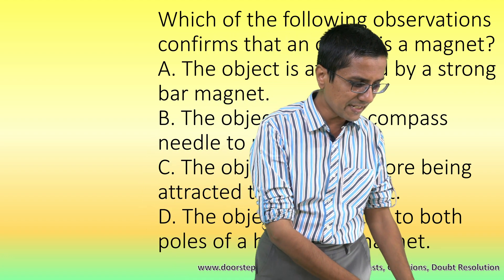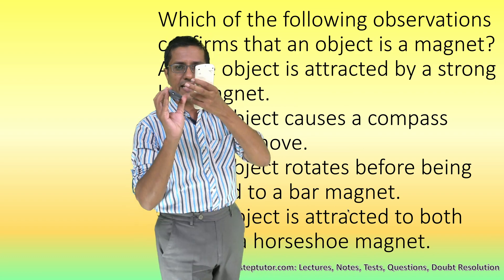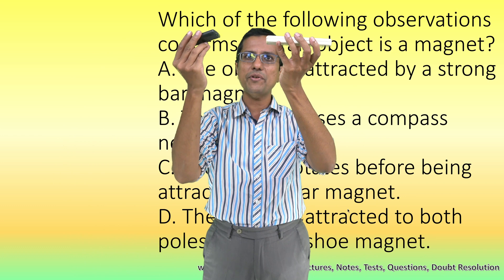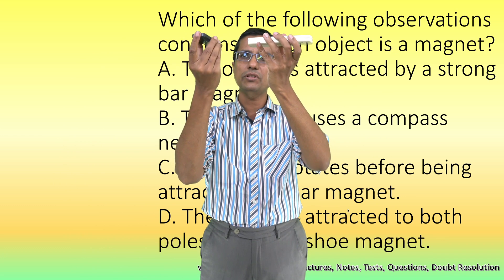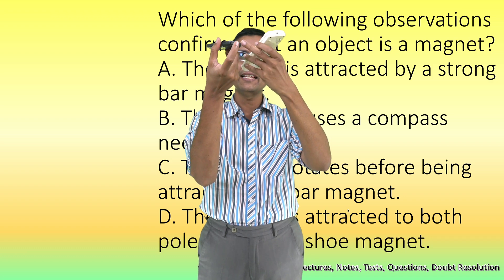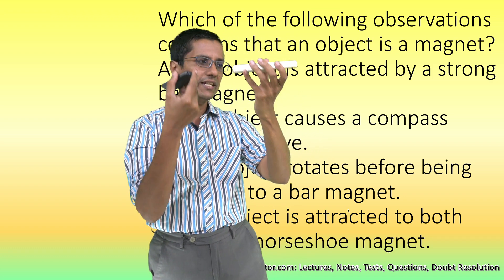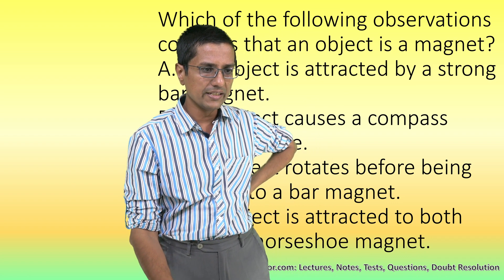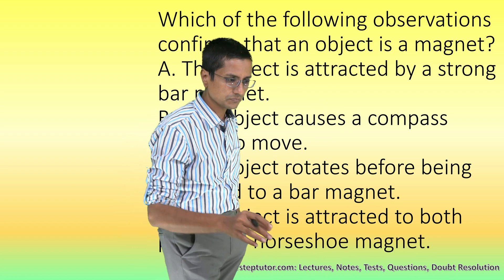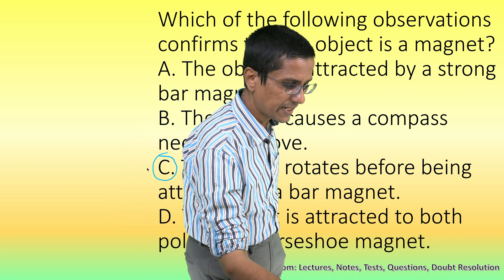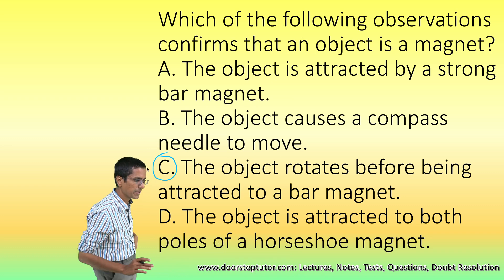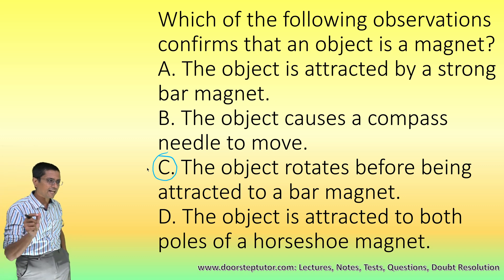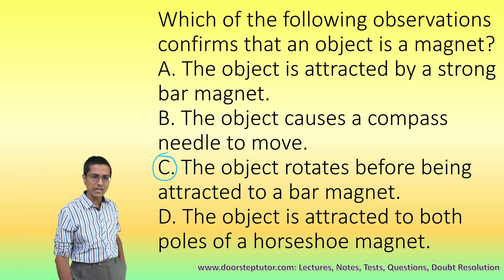That rotation is a 100% signal that this object is also a magnet. What is happening is that I am trying to bring north pole and north pole together, and because north poles repel, the small piece rotates so that its south pole faces the north pole. This is the observation in choice C that guarantees the object is a magnet — the object rotates before being attracted to the bar magnet.